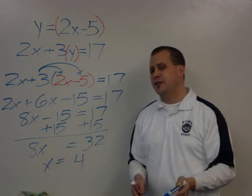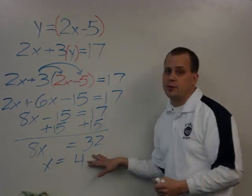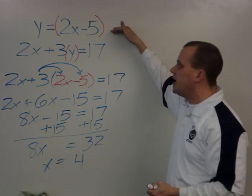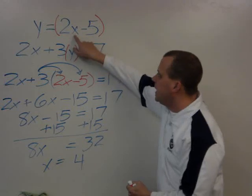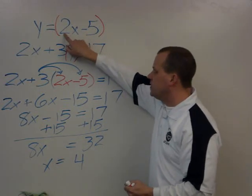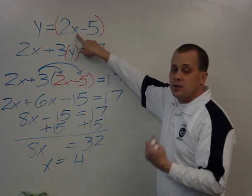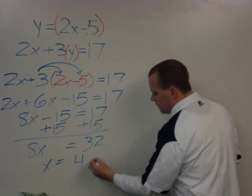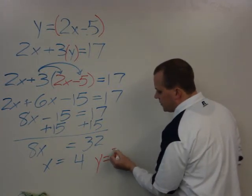Now, as soon as I found out what x is equal to, I need to plug it back into this equation to find out how much y is. So if I take 4 and I plug it back in, what's 2 times 4? 2 times 4 is 8. 8 minus 5, y equals 3.